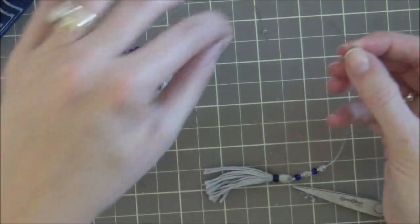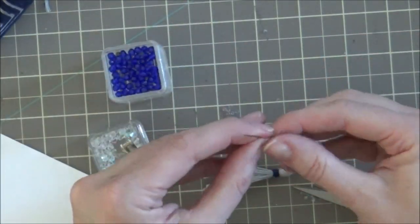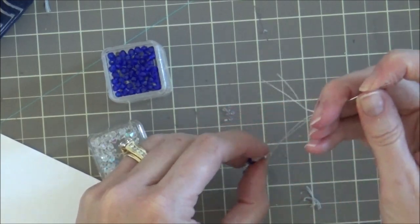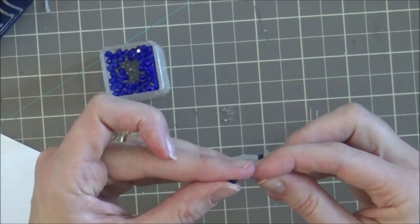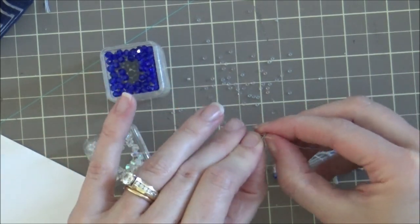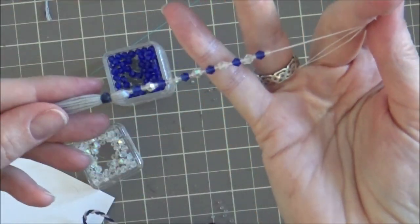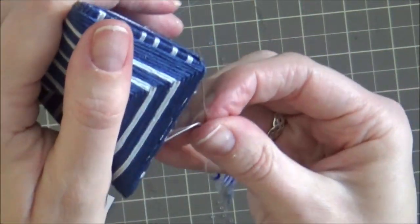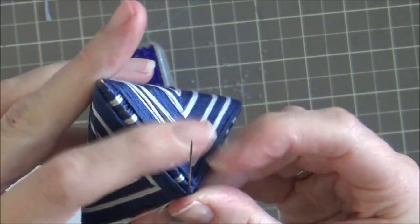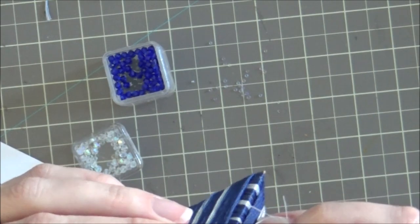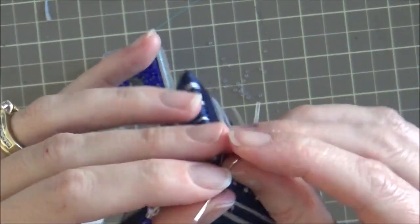I repeated this beading process on all four tassels. The bottom tassel is the longest and I did about 13 of the large beads on that. The corner pieces I did somewhere more in the range of four or five large beads. Once I've got my beading done, I'm going to go ahead and run that needle and thread through the actual cardboard. You can run it just through the floss, but I feel like it's definitely more secure going through the cardboard.